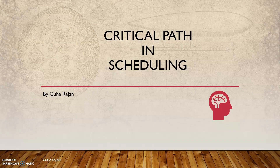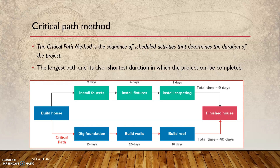Let us now look at critical path in scheduling. We will first understand what is a critical path. The critical path method is a sequence of schedule activities that determines the duration of the project. This is quite important — it is the longest path and also the shortest duration in which the project can be completed.